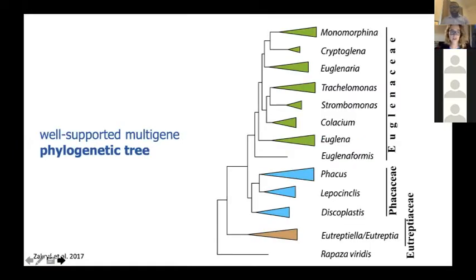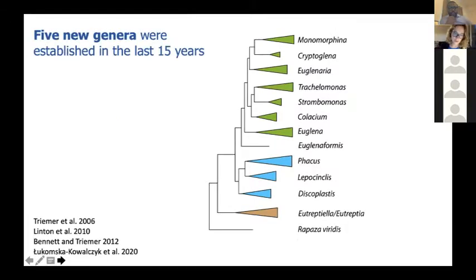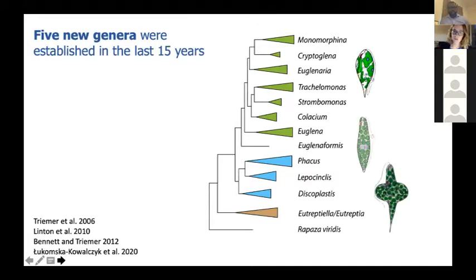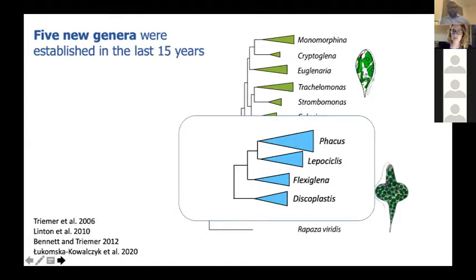Thanks to the sequences, it was possible to obtain a reliable phylogenetic tree — a multigene tree, well supported and well resolved, especially at the genus level, with only one genus currently non-monophyletic. In the last 15 years, as these trees were built repeatedly, five new genera were also established, four of them only or mainly based on molecular data. Those four genera — Euglenaria, Eugleniformis, Discoplastis, and the very recently described Flexiglena, sister to Leptosynchris and Phacus — were established from species previously classified in the genus Euglena.